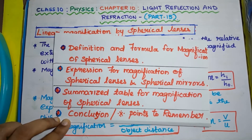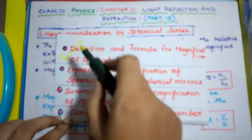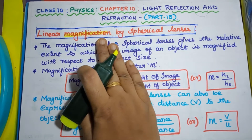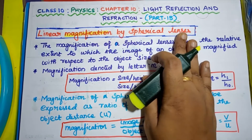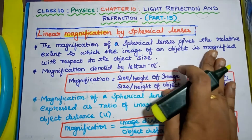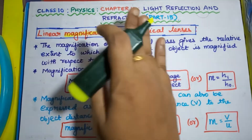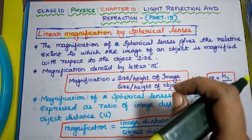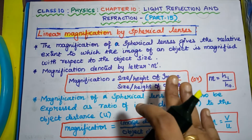Let's start with the definition and formula for magnification of spherical lenses. Generally, magnification represents the word 'size' of anything. Here we are going to see magnification produced by spherical lenses. Usually, spherical lenses form images with respect to an object. So magnification by spherical lenses helps to know the size of the image based on the size of the object, or with respect to the size of the object.